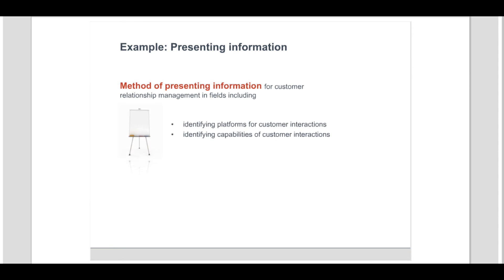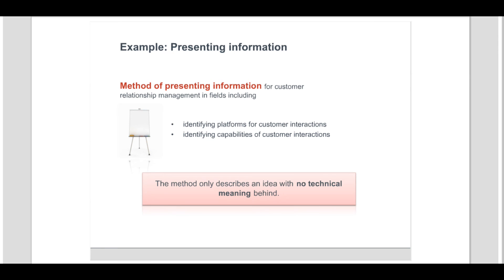In this example, the method defines how information is to be presented. No technical meaning can be associated with any of the terms either independently or in combination with one another. The method merely describes an idea as to how information can be presented and hence lacks technical character.